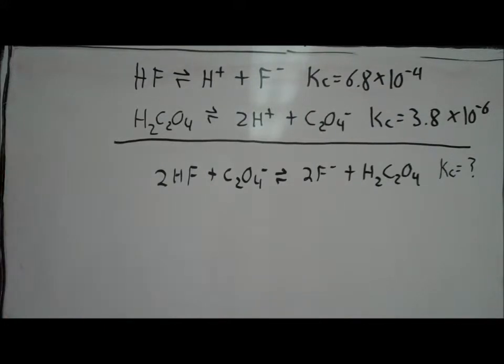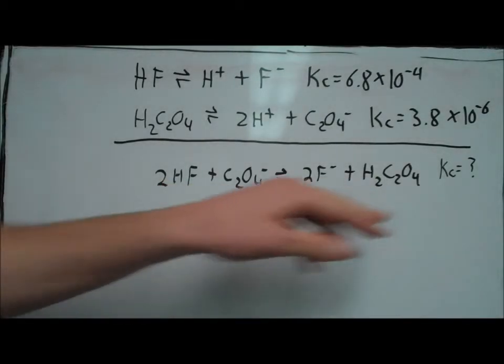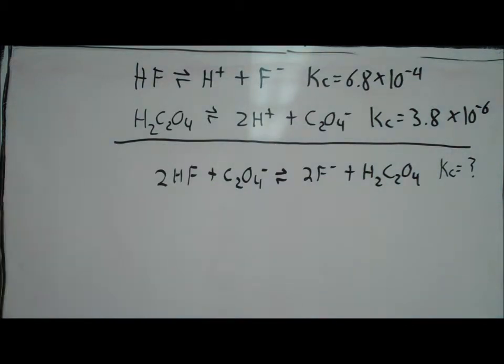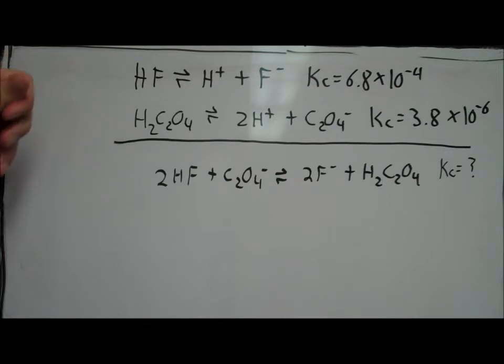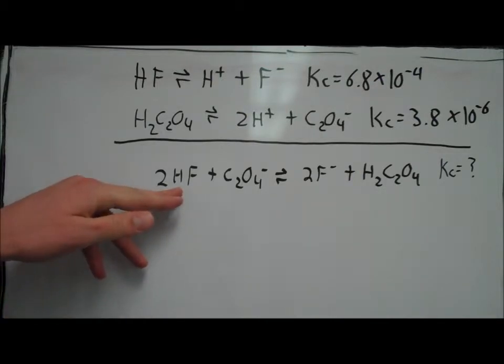Here in this problem we've been given two different equations with equilibrium constant values. What they want us to solve is find the equilibrium constant value for this equation. In order to do that, all we have to do is add the top equation to the bottom equation to get this. But before we can add both of these equations, we have to modify them to get the values that we have down here.